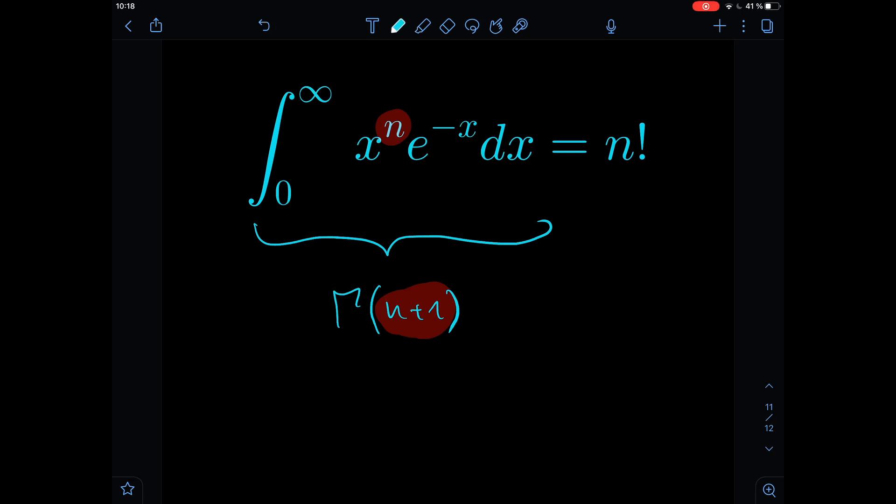So we're going to prove that this integral, this improper integral, is equal to n factorial for some natural number n and we're going to apply Feynman's integration technique, which is one of the coolest integration techniques ever. So let's just go.